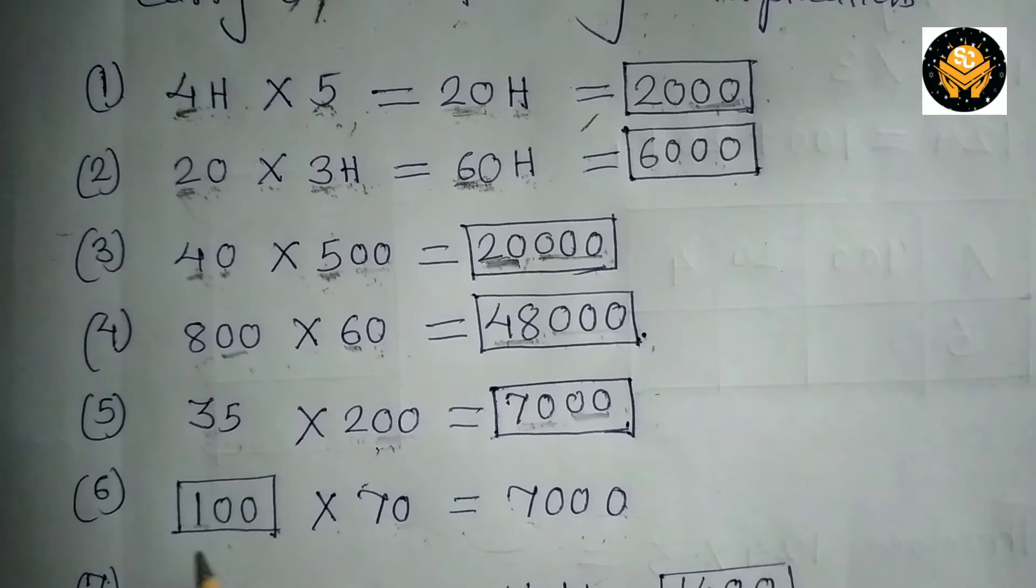Now the next sum is dash multiplied by 70 is equal to 7,000. Now we know that 7 1s are 7. So write 1 here first. Then 1 0 is here that you have already written here. So 2 0s remain, those 2 0s you are going to write here. So this number is 100. Now let's see, 100 multiplied by 70 is 7,000.